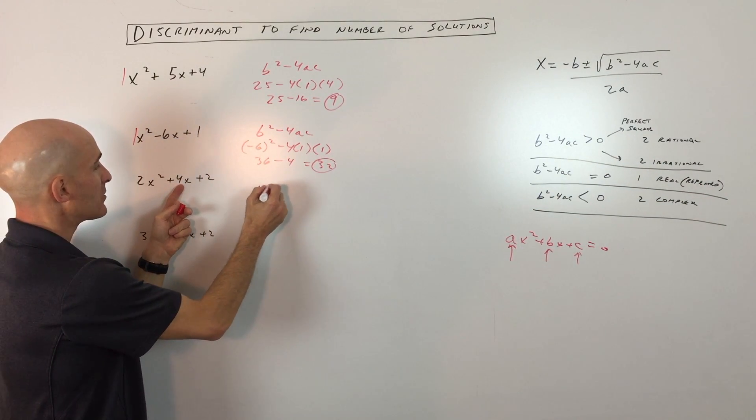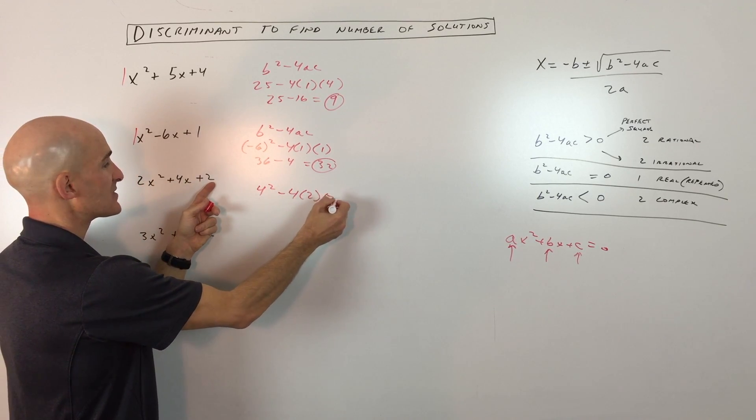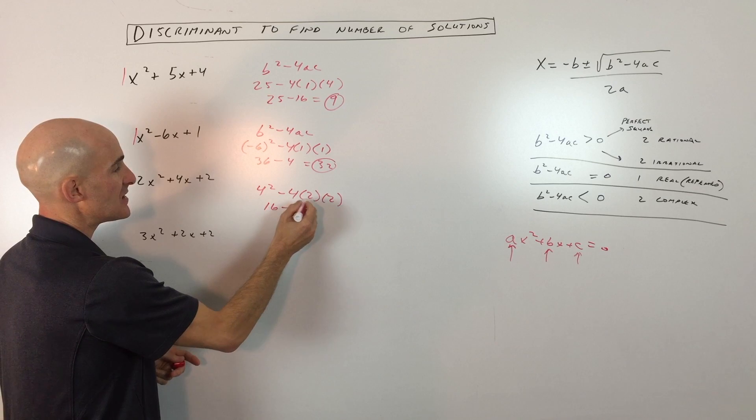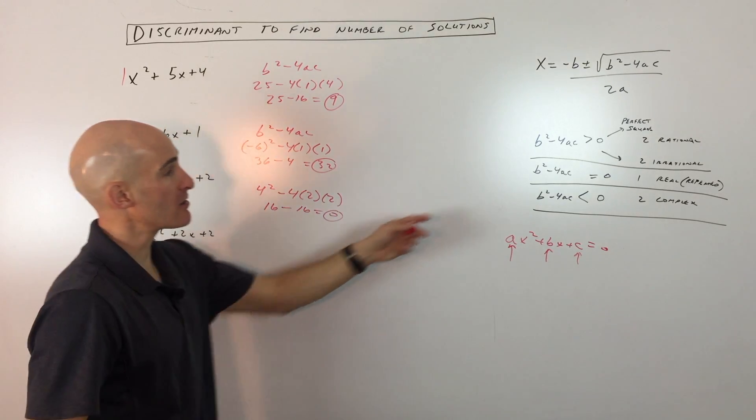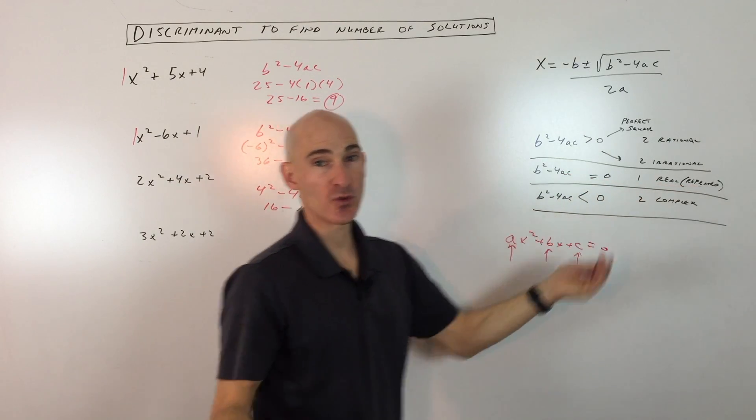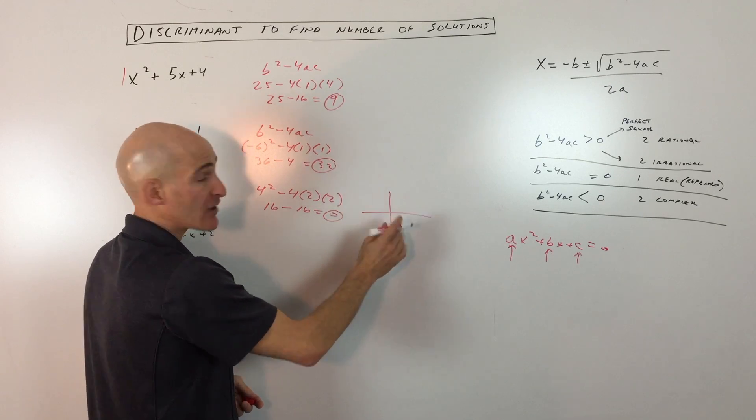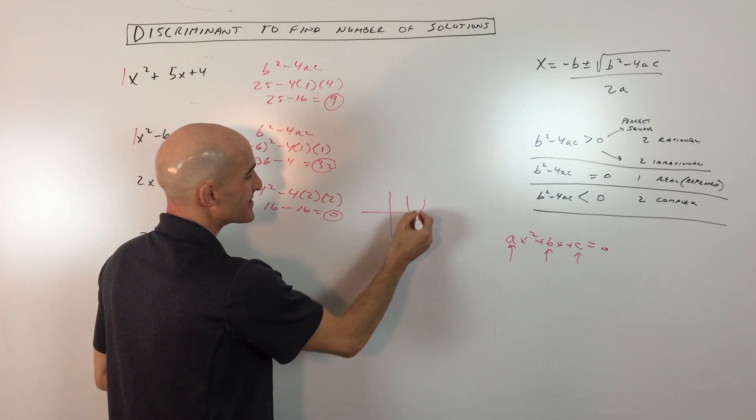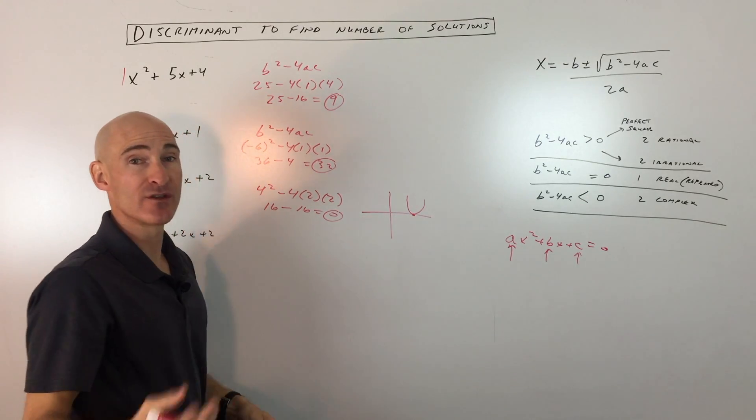This one here, we've got b squared, which is 4 squared, minus 4 times a, times c, which gives us 16 minus 16, which equals 0. So you can see here, that's this case here. We have one real solution, but it's a repeated solution. What that means is that if you were to graph this parabola, basically what it's going to do is it's going to touch the x-axis just at one point, and that point's going to be the vertex.